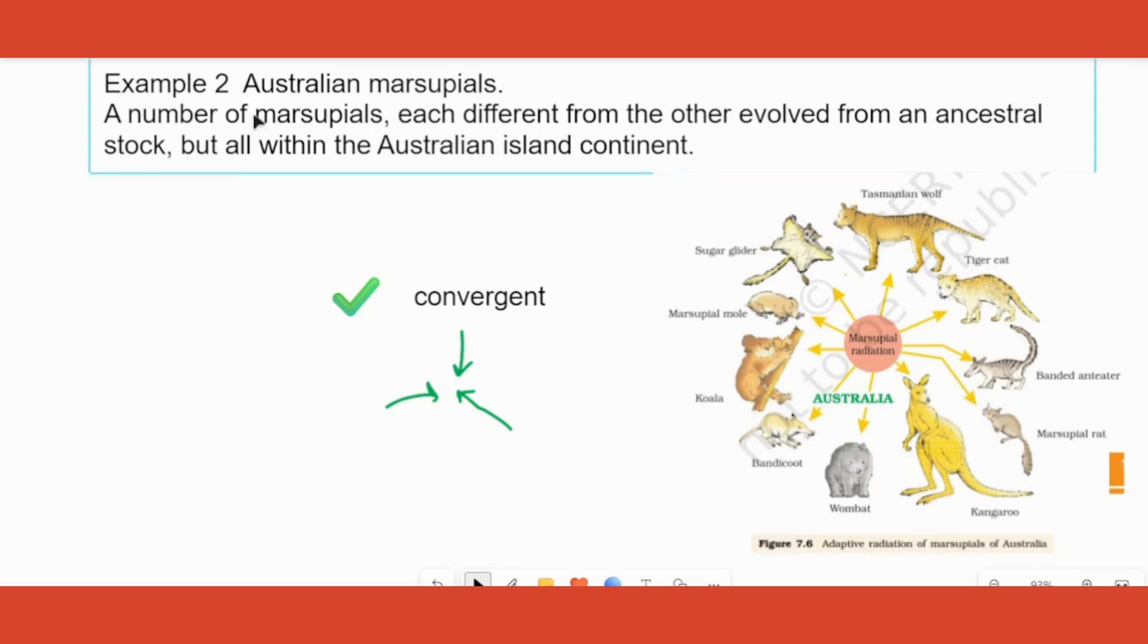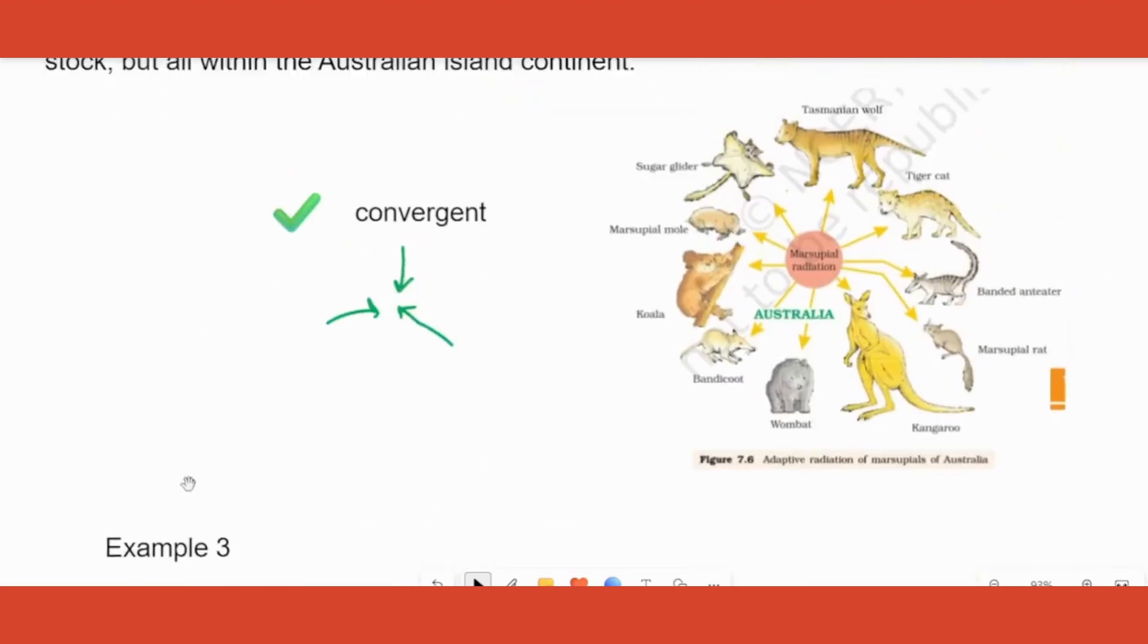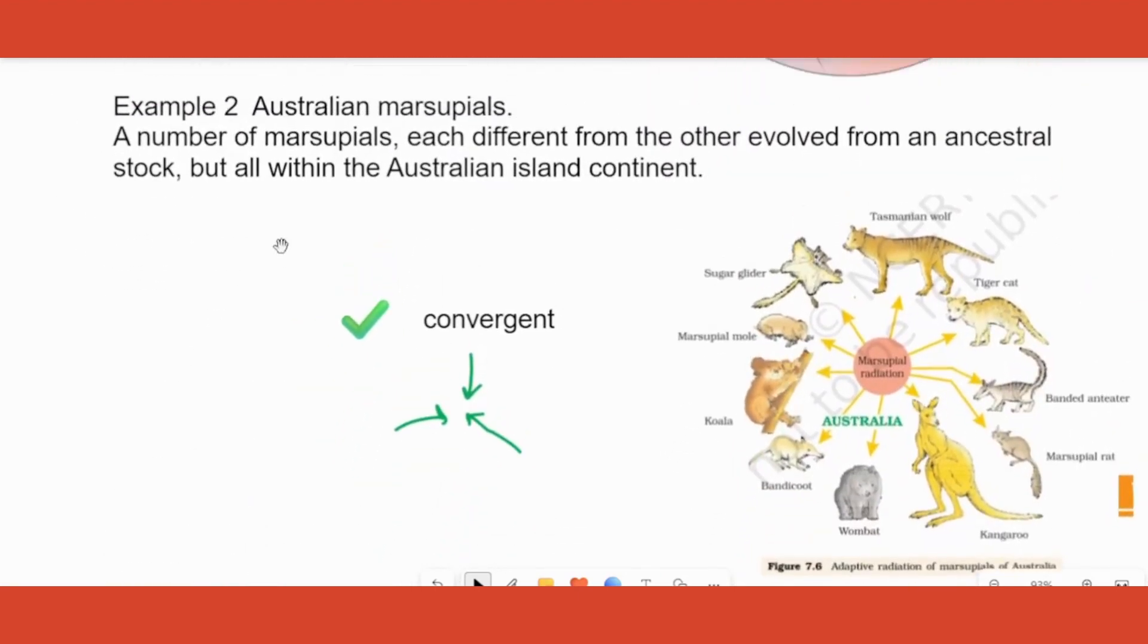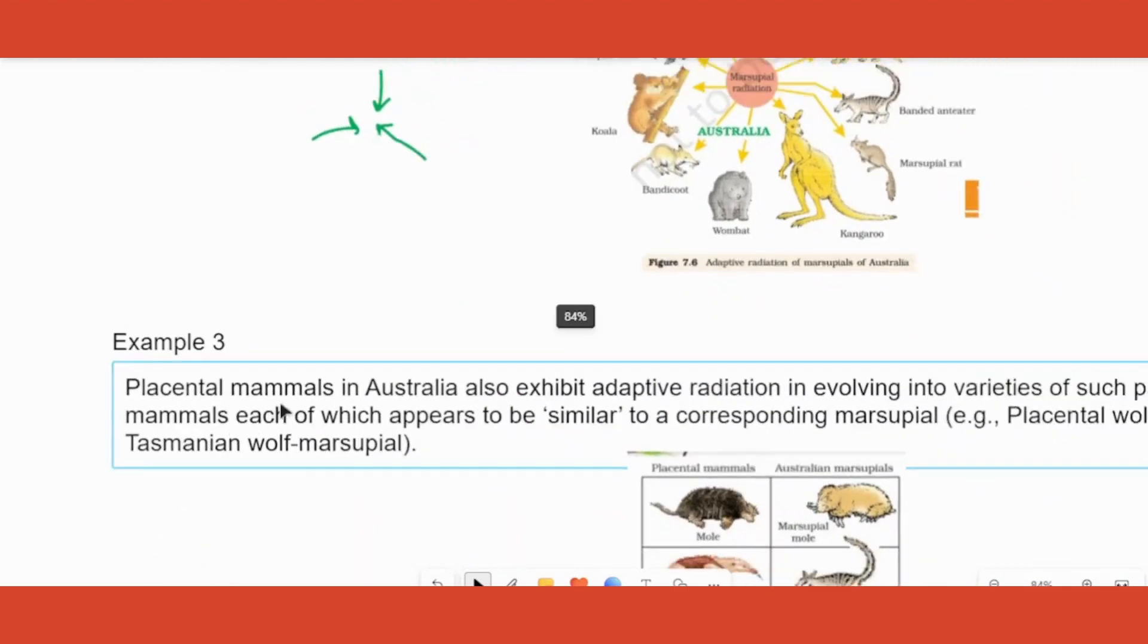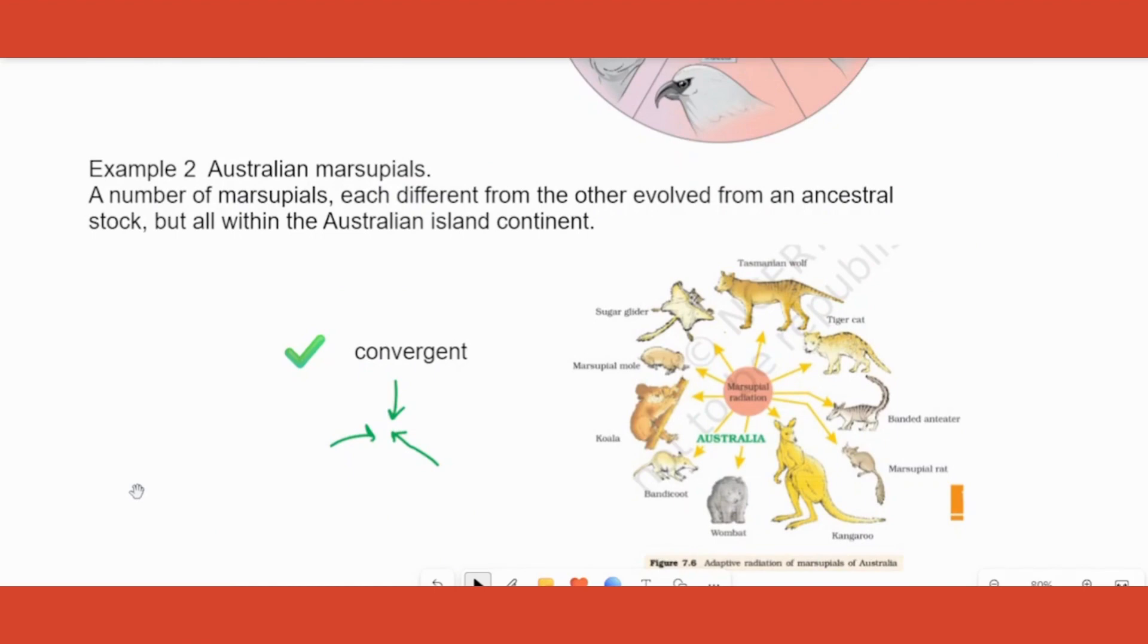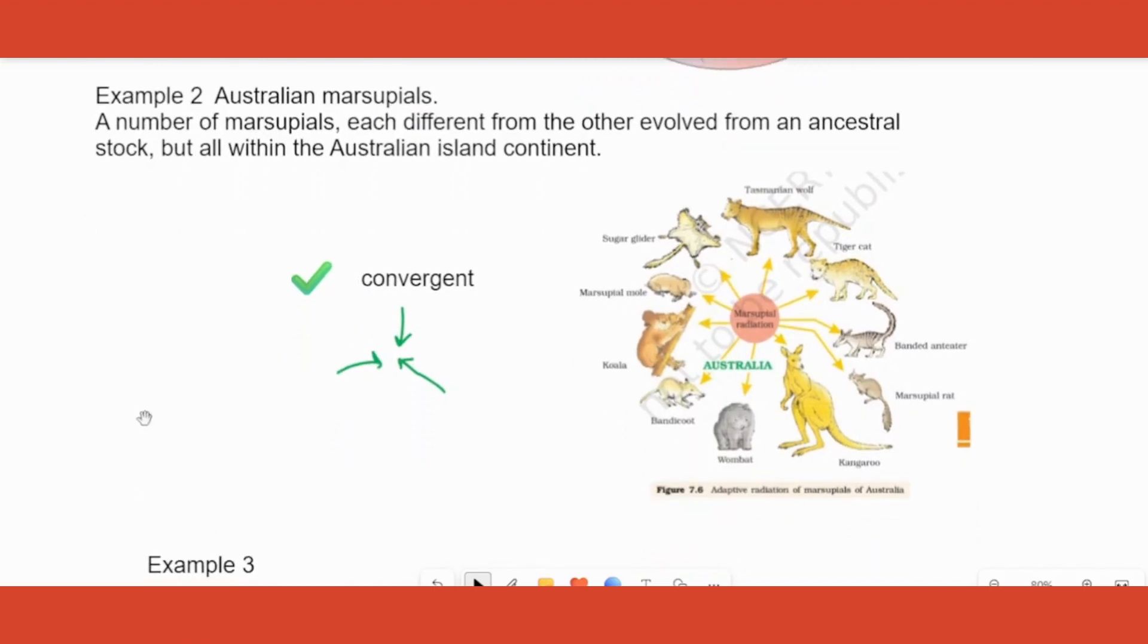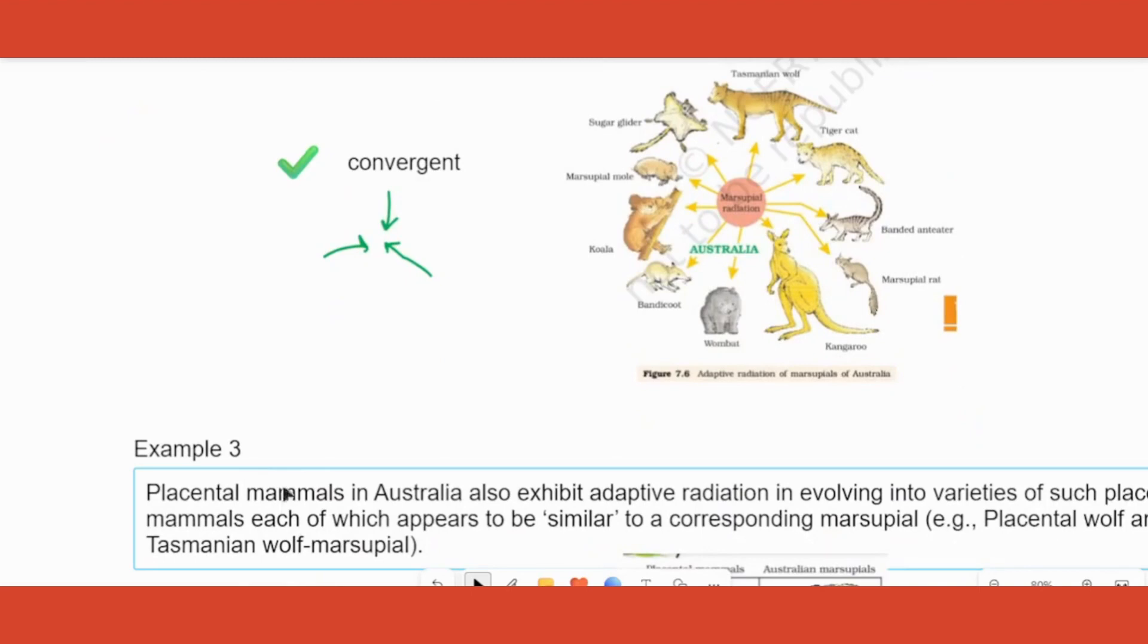Second example and the third example are about mammals. You know there are different types of mammals: one are marsupials which have pouch like our kangaroo, other are normal placental mammals. Both mammals evolved in Australia. So if you get a question, give an example of a geographical area where two adaptive radiations happen and explain both.